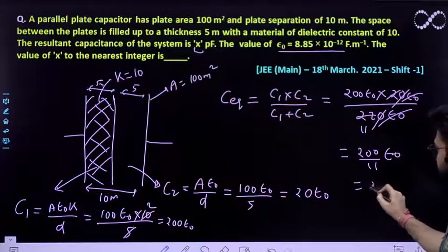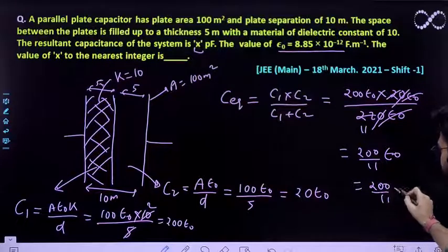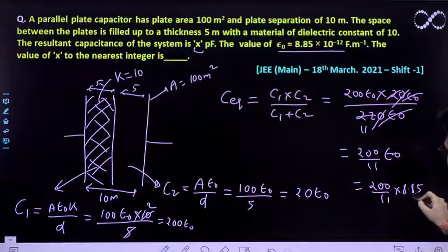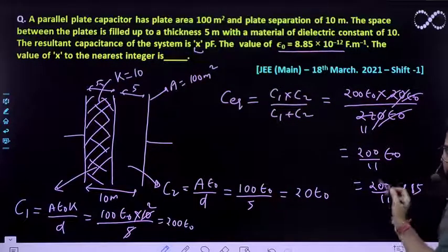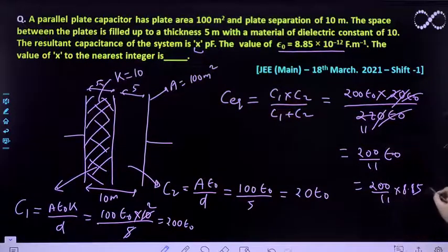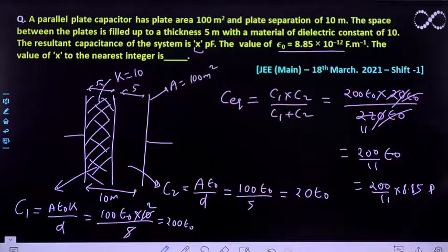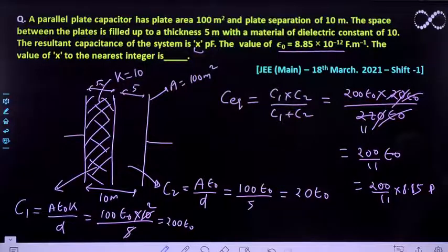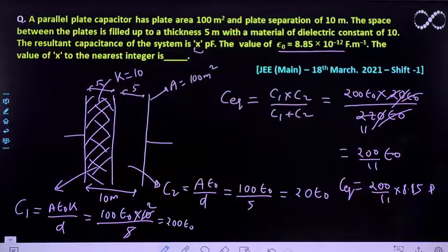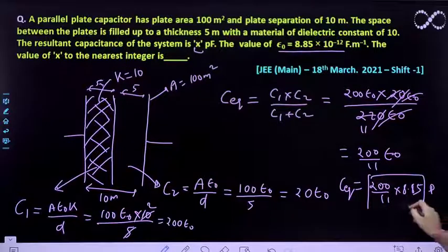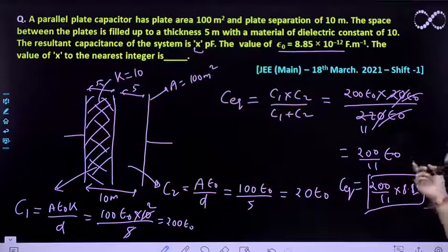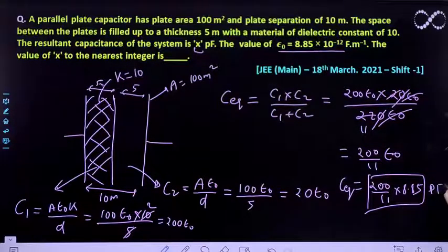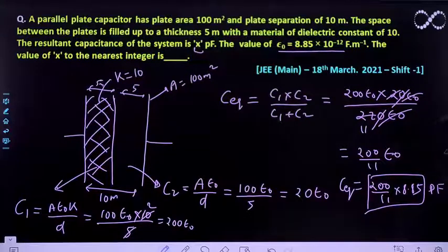Again aapko picofarad mein nikalna hai. Toh this would be 200 by 11 into 8.85 into 10 raised to power minus 12. Toh minus 12 is nothing but pico mein aa jayega, that is 10 to power minus 12 is pico. So this is the effective capacitance that you are getting. Isko solve kar lenge kyunki 10 to power minus 12 is pico. You'll be getting picofarad over here. 10 to power minus 12.